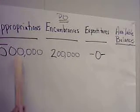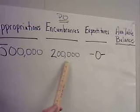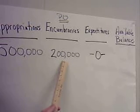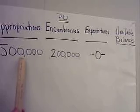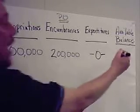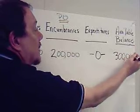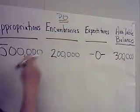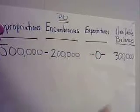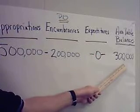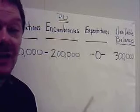So what will our available balance be? We start off with a budgeted expenditure or appropriation of $500,000, we've encumbered $200,000, and there are no expenditures yet. So we take the $500,000, subtract the $200,000, and that gives us an available balance of $300,000 — just simple math. Appropriation minus encumbrance minus expenditure equals available balance. This is an important equation in governmental accounting.